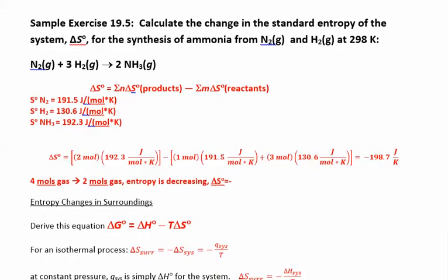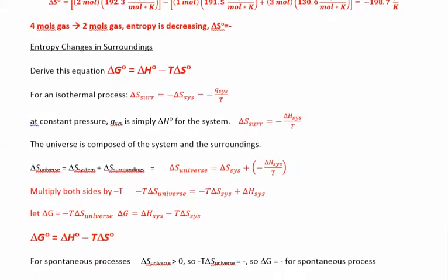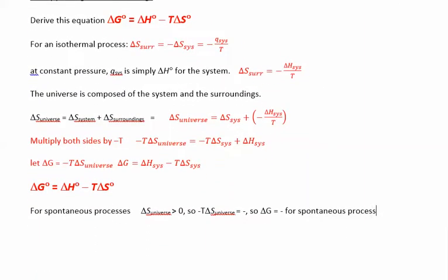The last thing we're going to do is derive the Gibbs free energy equation. Delta G equals delta H minus T delta S, where delta G is what we're trying to find, delta H is the enthalpy, T is the temperature, and delta S is the entropy. For an isothermal reaction, delta S equals Q over T.